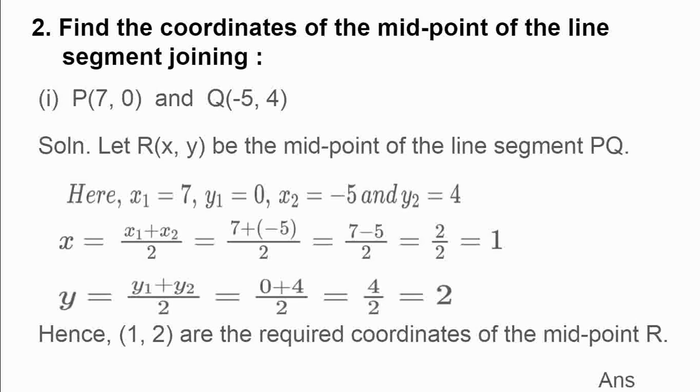Putting the value of x1, this is 7 plus x2 is -5 divided by 2, 7 minus 5 by 2, 2 by 2 equal to 1. Similarly, the formula of y coordinate is equal to y1 plus y2 divided by 2. So, 0 plus 4 by 2 equal to 4 by 2 equal to 2. So, you are getting x coordinate is how much? 1. What is the value of y coordinate? It is 2. Hence, (1, 2) are the required coordinates of the midpoint R. This is your answer.